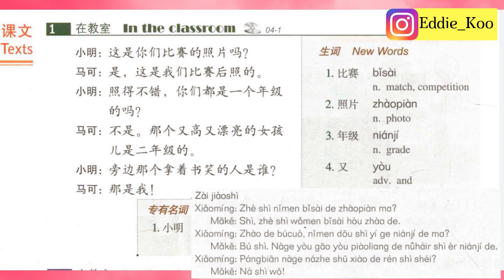这是我们比赛后照的。是 means yes. 这是 — this is. 我们 — our. 比赛 — competition. 后 means after, but in Chinese you put the event first then 后: 比赛后 means after the match. 我们比赛后 means after our match. 照 is a verb meaning take a photo, but here it's passive voice — be taken. So the literal translation is 'this was our match after taken,' which sounds a little weird, but that's how the order is structured in Chinese — it's different from English.